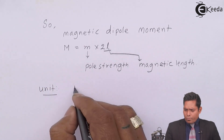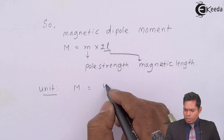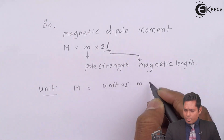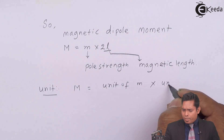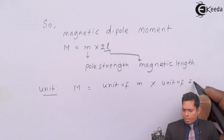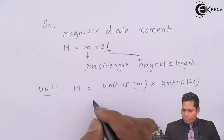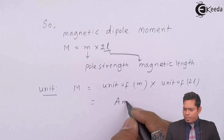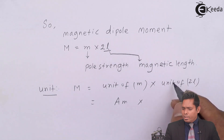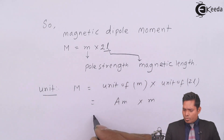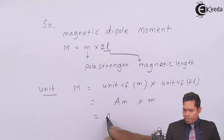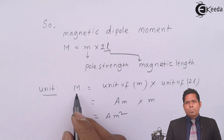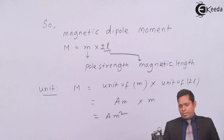The unit of magnetic dipole moment M: the unit of pole strength m is ampere meter, multiplied by the length in meters, so the unit of M is ampere meter squared. The unit of dipole moment is ampere meter square.